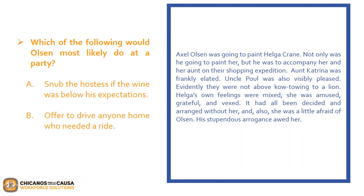The second question asks: which of the following would Olsen most likely do at a party? Is it A, snub the hostess if the wine was below his expectations? Or B, offer to drive anyone home who needed a ride? If you chose A, snub the hostess if the wine was below his expectations, that is correct. The evidence is shown at the end of the first paragraph: 'she was afraid of Olsen. His stupendous arrogance awed her.' By this statement, we can infer Olsen's character based on what we know about people with stupendous arrogance.